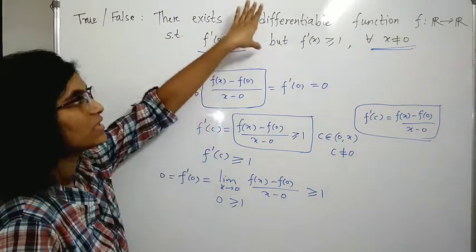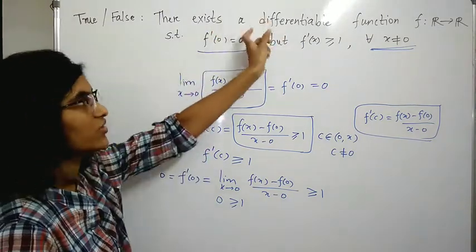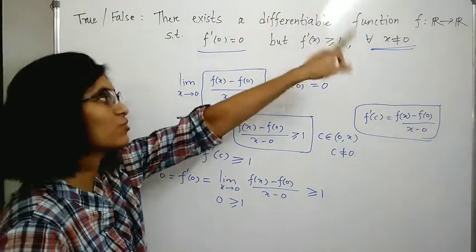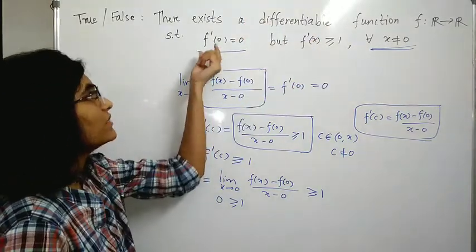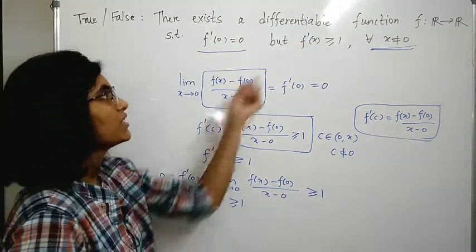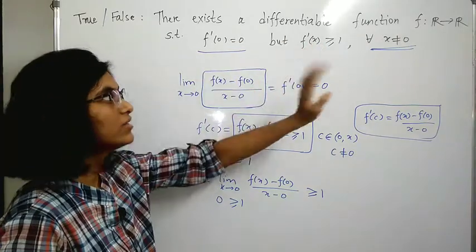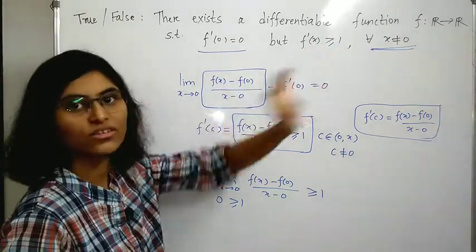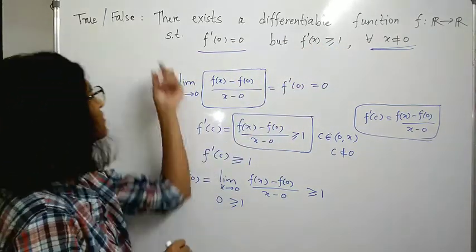We have a contradiction, which means there does not exist such a differentiable function from ℝ to ℝ with f'(0) = 0 but f'(x) ≥ 1 for all x ≠ 0. So this statement is FALSE.